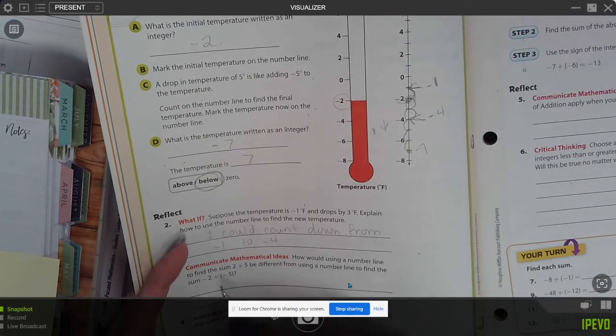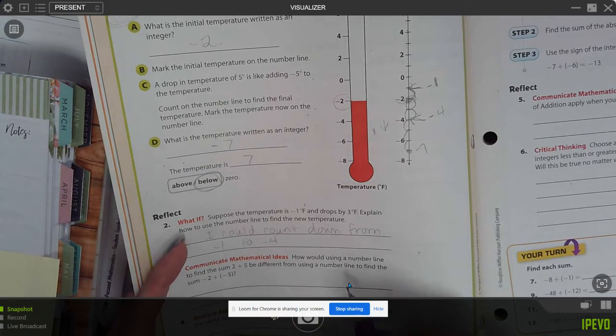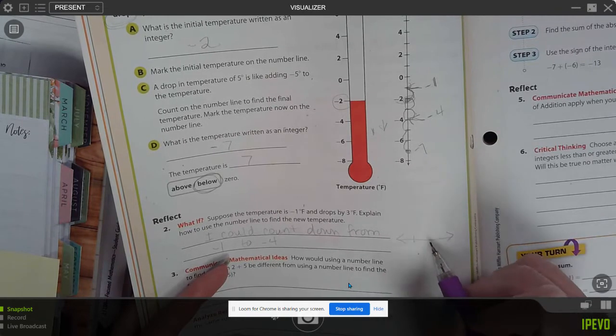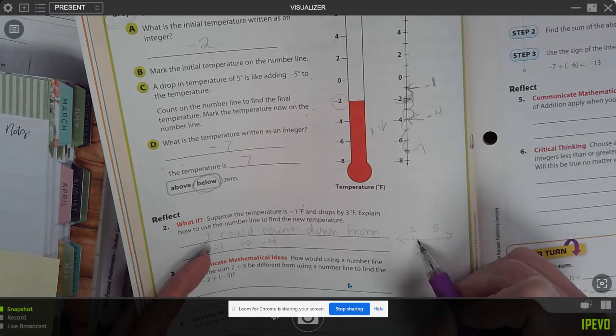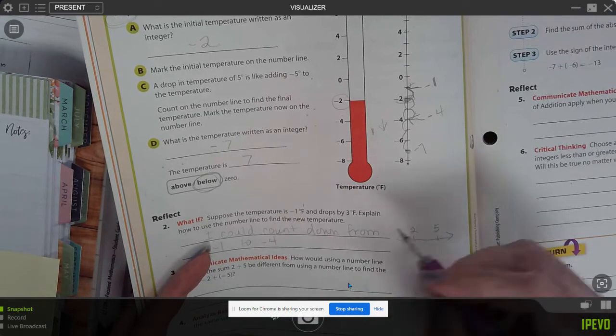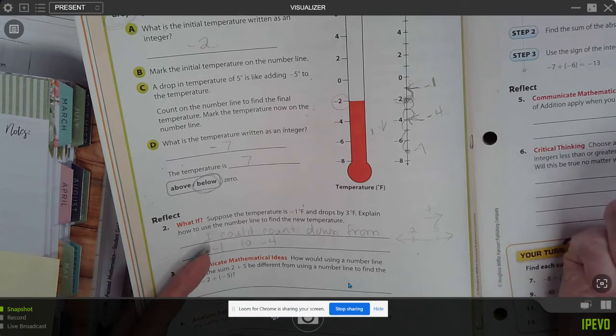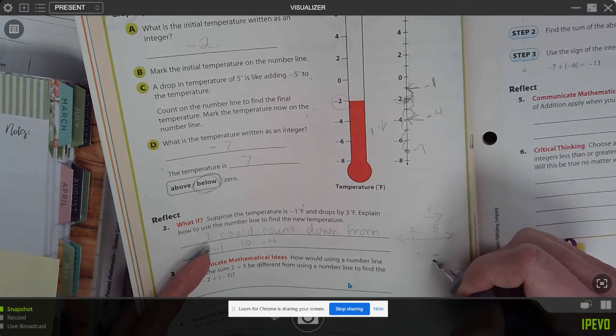How would using a number line to find the sum two plus five be different from using a number line to find the sum negative two plus five? So let's think of our number lines. If we have negative two or two and five, when it's positive, it goes that way. When you're adding, it goes that way. When you're negative, it goes that way.